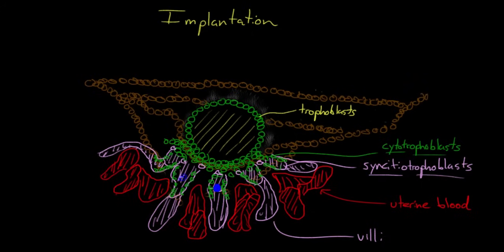Within these villi, you start to develop little fetal blood vessels. As you can see, the fetal blood vessels are in really close contact to the uterine blood vessels. Now, they're not actually mixing together because there's this membrane of trophoblasts in between them. But they're close enough that nutrients from the uterine blood can diffuse into the fetal blood, and waste products from the fetal blood can diffuse out into the uterine blood.